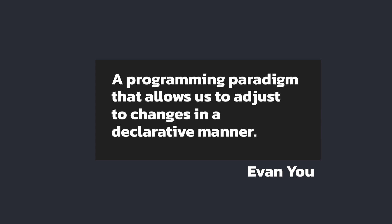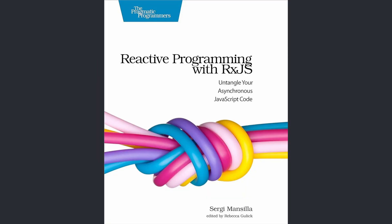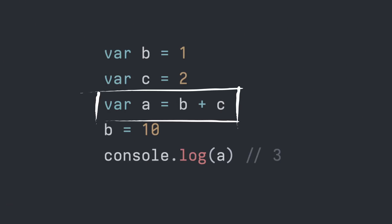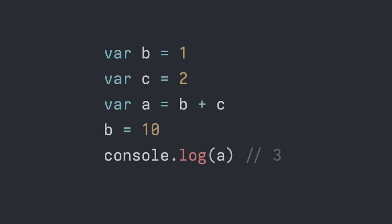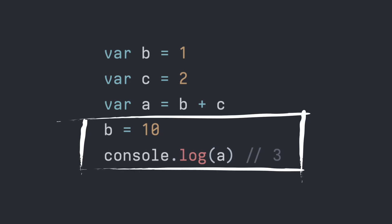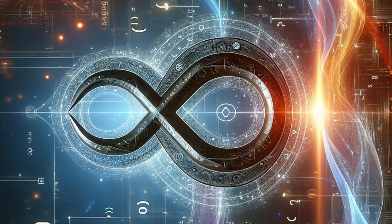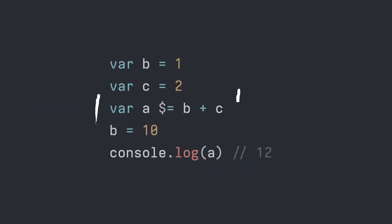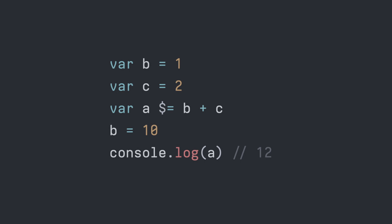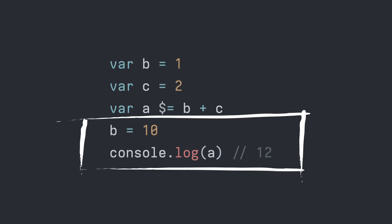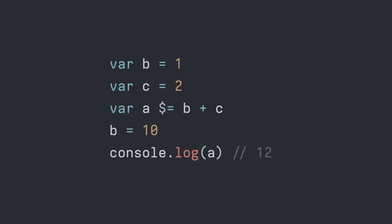The declarative part is quite important and explained well in reactive programming as a general programming paradigm. For example, in an imperative programming setting, A equals B plus C means that A is assigned the result of B plus C at the instant the expression is evaluated, and later the values of B and C can be changed with no effect on A. Now imagine instead a special destiny operator. In reactive programming, using the destiny operator, we would write A destiny B plus C. This means that the value of A is automatically updated whenever the values of B or C change, without needing to explicitly repeat the assignment each time those values adjust.